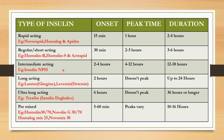The third one is intermediate-acting insulin. Here the onset is 2 to 4 hours, peak time is 4 to 12 hours, and duration is 12 to 18 hours. It covers almost half of the day.